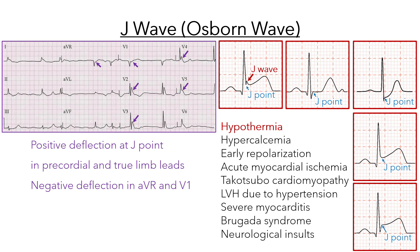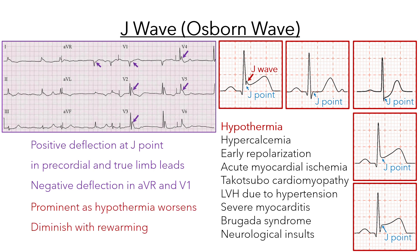In hypothermia, reduced body temperature leads to altered myocardial repolarization. The waves often become more prominent as hypothermia worsens and may diminish with rewarming.